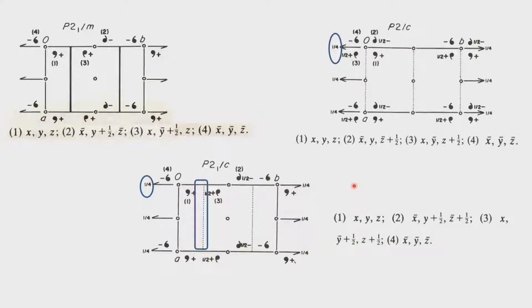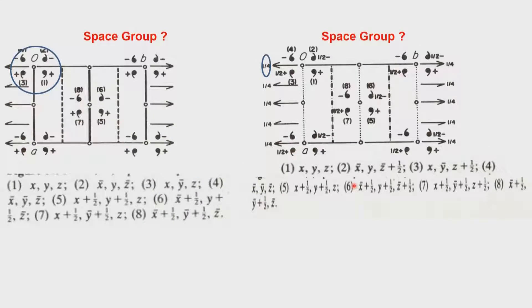From P21 upon C, we will now go to the other space groups which are possible in the monoclinic symmetry. I have indicated two space groups here, I have given the equivalent points diagram overlapping the symmetry points. I want you to examine these equivalent points and the location of these symmetry points and make a guess of what could be this space group.